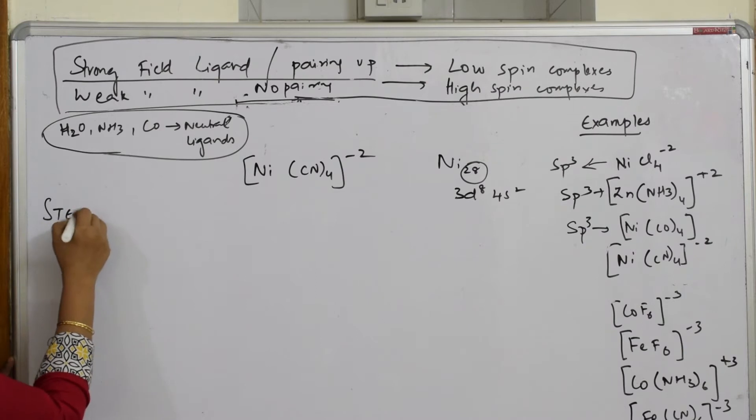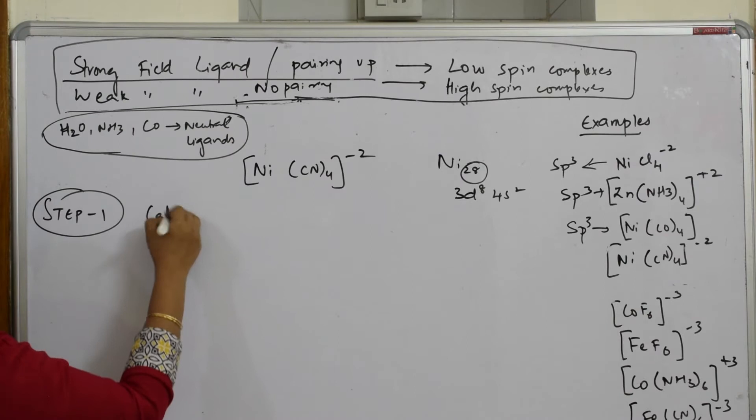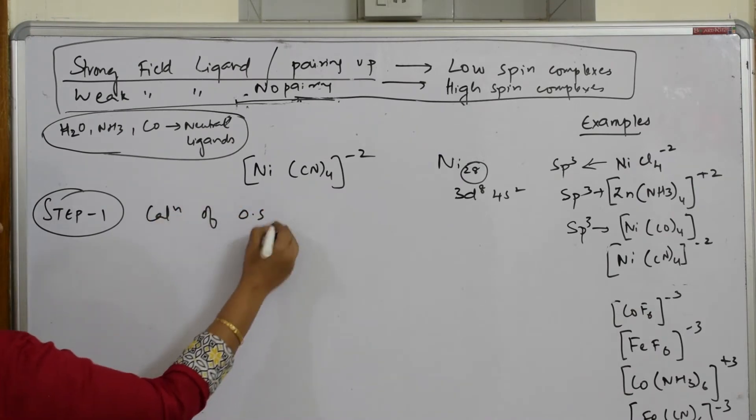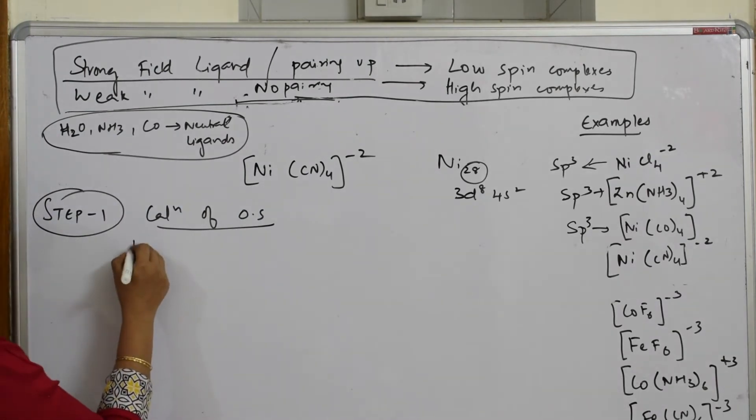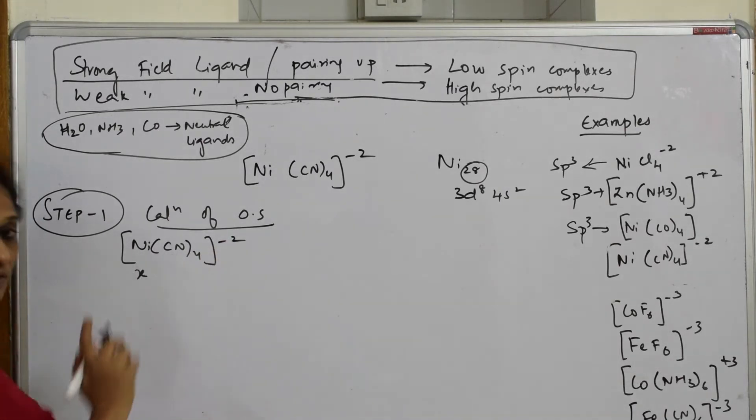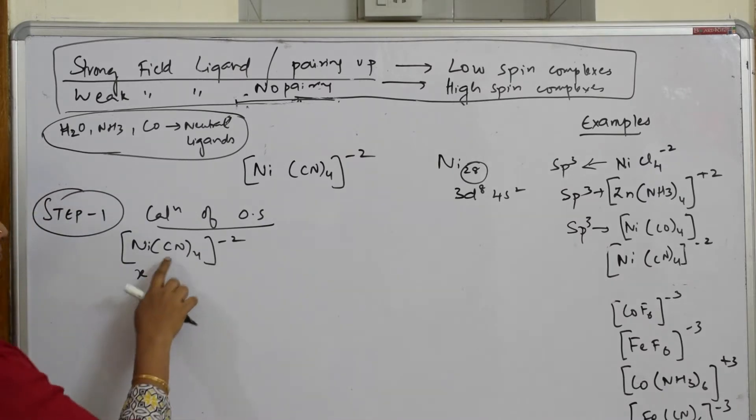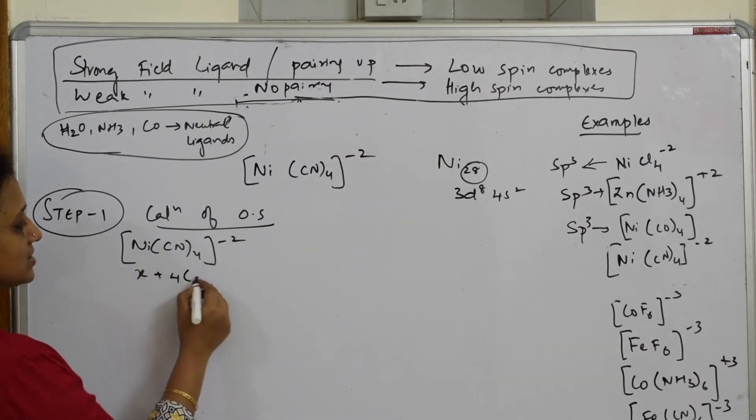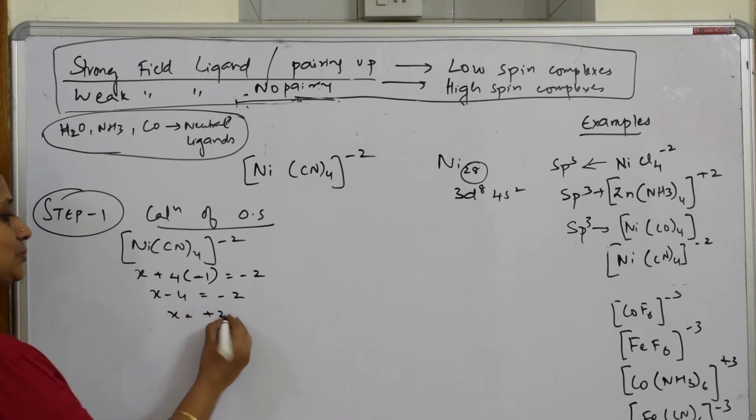What is Step 1? As I said, always Step 1 would be calculation of oxidation state. We have done the same in all the things. Take that nickel cyano minus 2: x plus cyano is minus 1. Cyanide ion is a negative anionic ligand, so x plus 4 times minus 1 equals minus 2. x minus 4 equals minus 2, x equals plus 2.